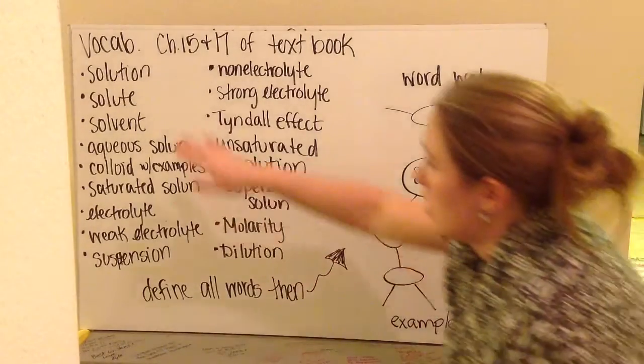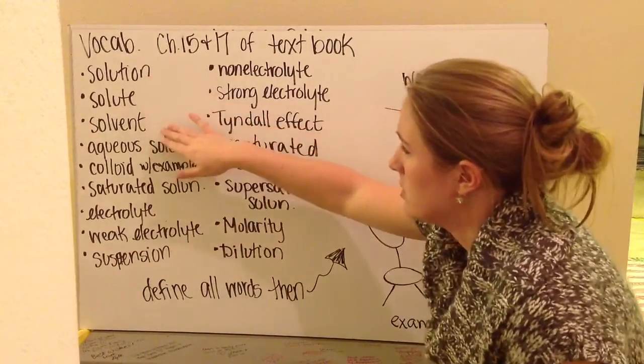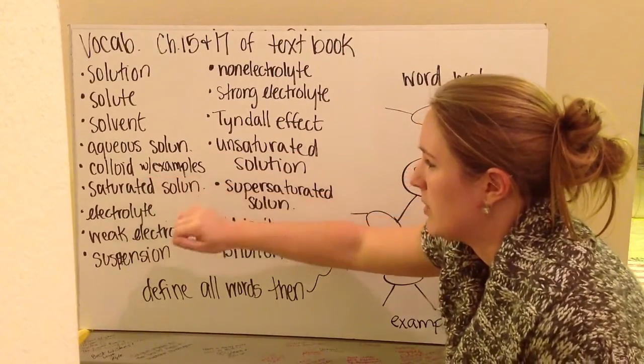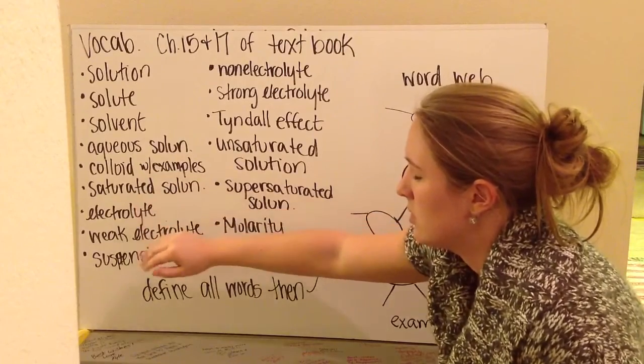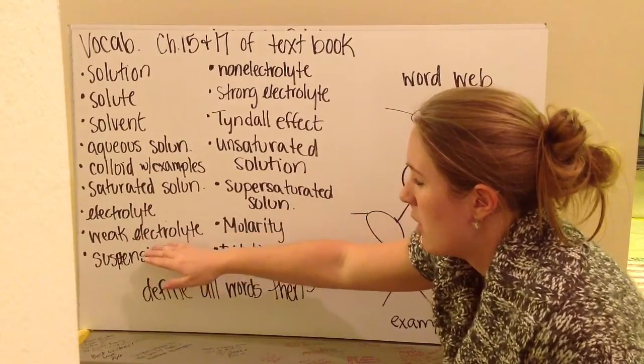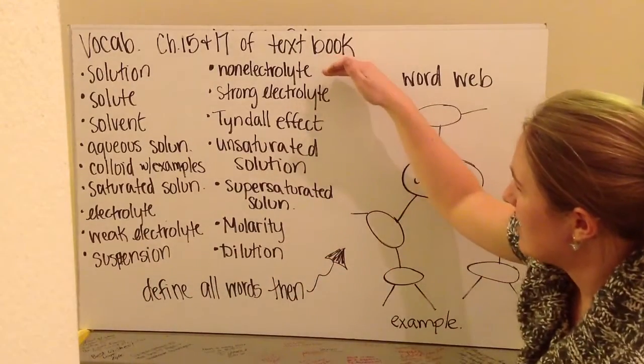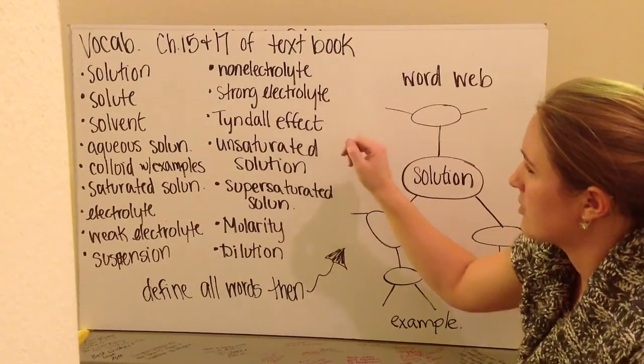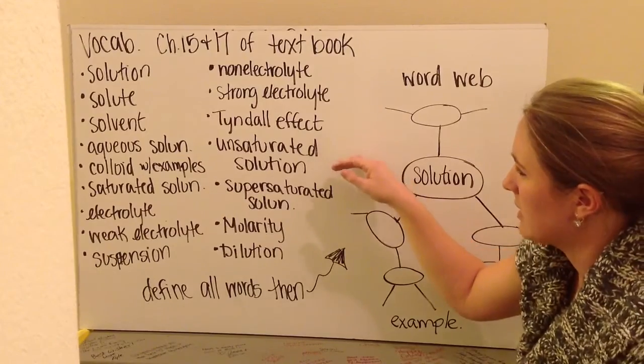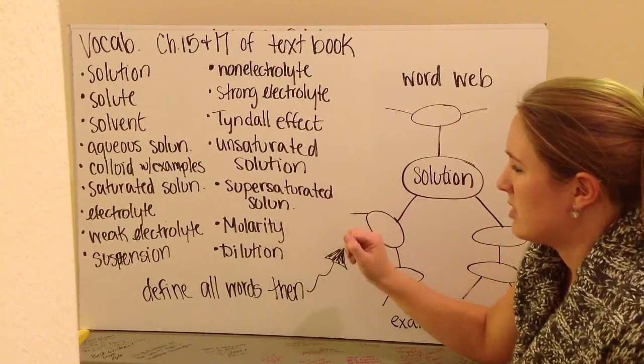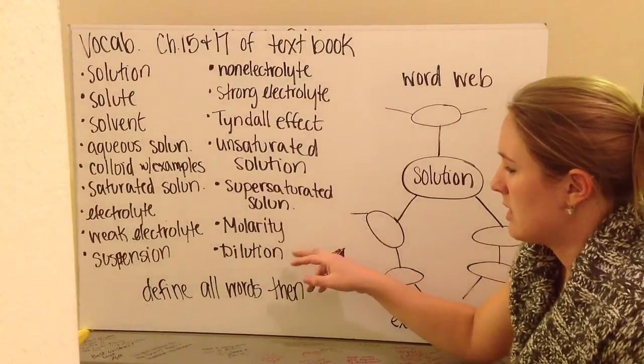The words are solution, solute, solvent, an aqueous solution, colloid with examples, a saturated solution, an electrolyte, a weak electrolyte, a suspension, a non-electrolyte, a strong electrolyte, the Tyndall effect, an unsaturated solution, and a supersaturated solution, molarity, and dilution.